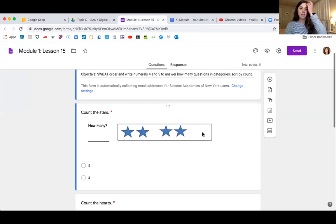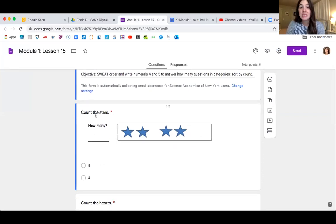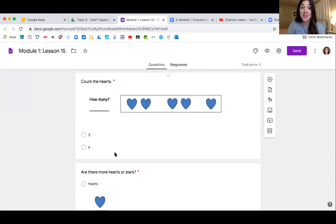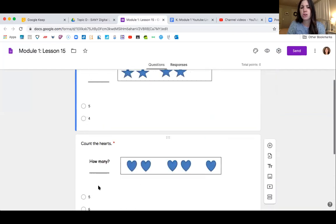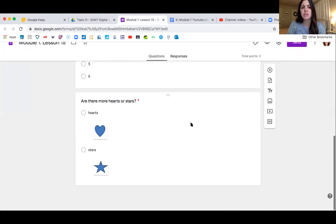Now let me show you your problem set for the day. You're going to count the stars, how many. Count the hearts, how many. And then go back and think, are there more hearts or more stars, and then you'll choose. That is your exit ticket for the day. So we counted our objects, we counted groups of five or three, and we practiced writing the numbers four and five. Good work today guys, we will be back tomorrow with another fun math lesson. See you next time.